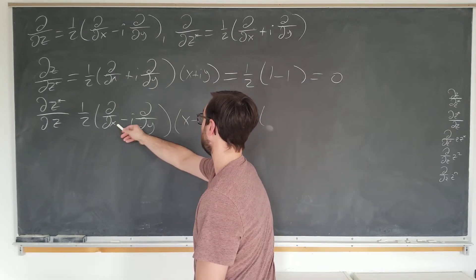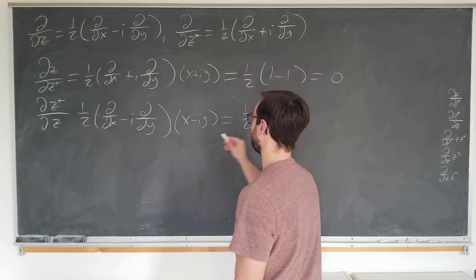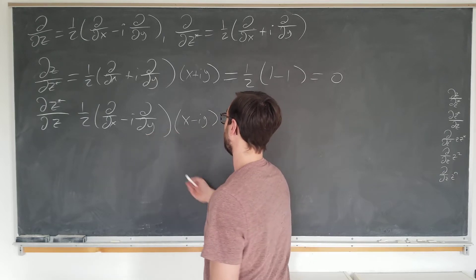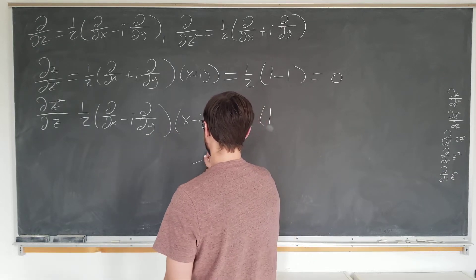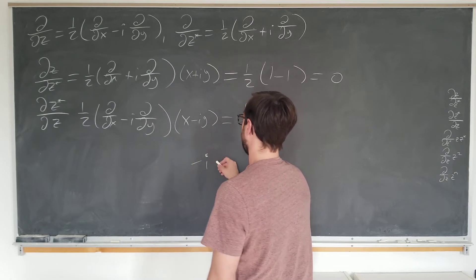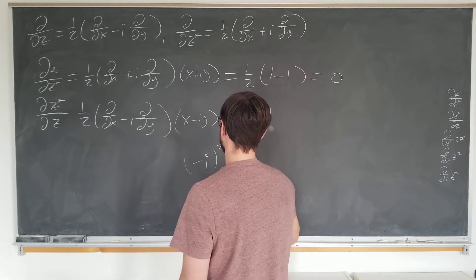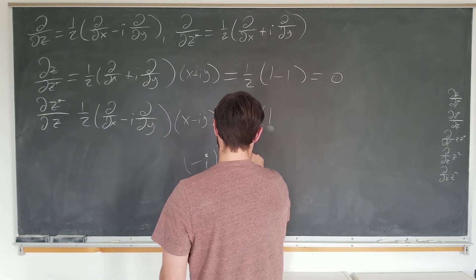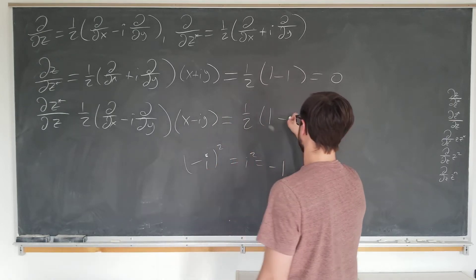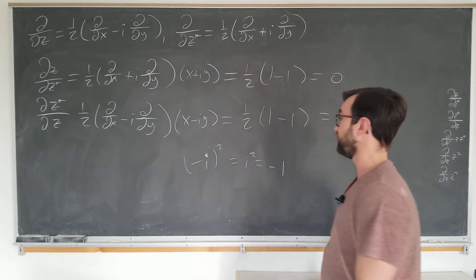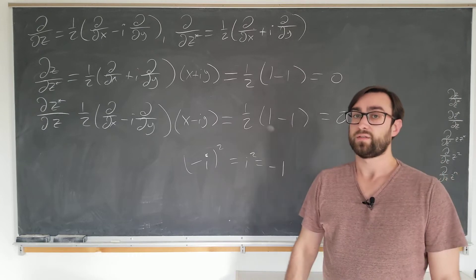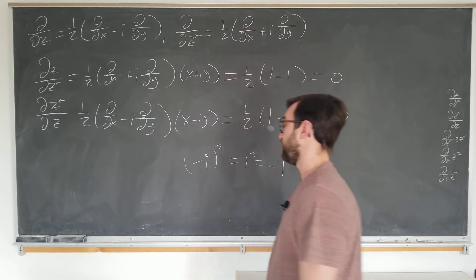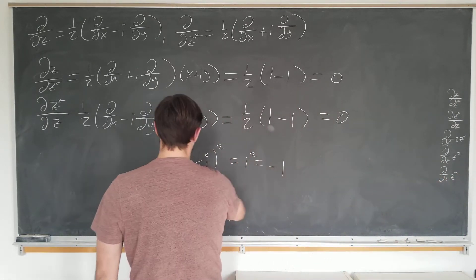One half dx by dx is one, zero for the y term. The minus i dy operator acting on x is zero, and if we do it on the y we get minus i squared, which is just i squared equal to negative one. So it becomes zero again. So the z and the z star operators are independent in this sense.